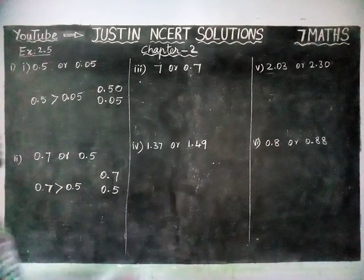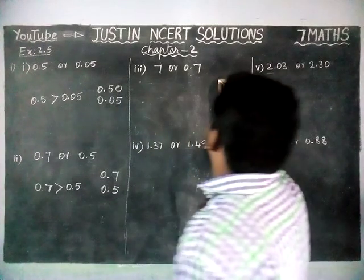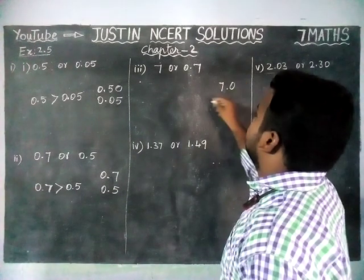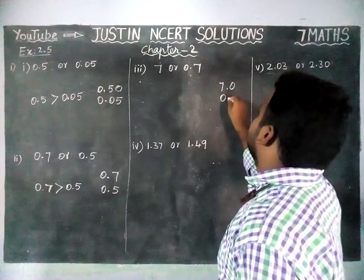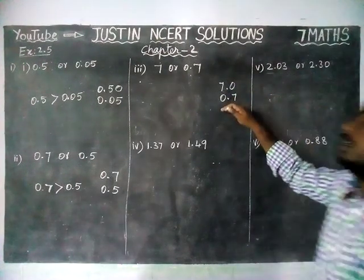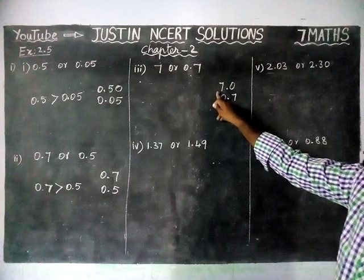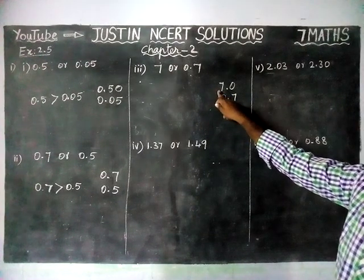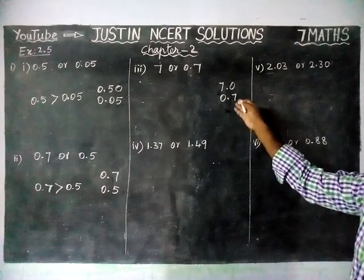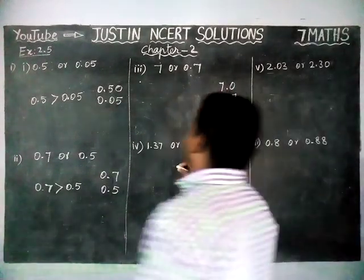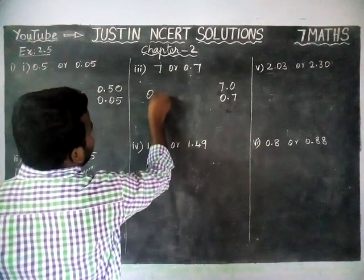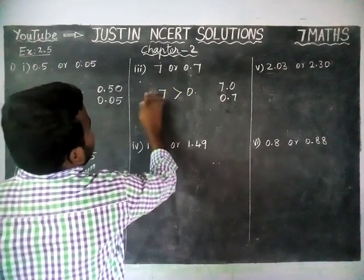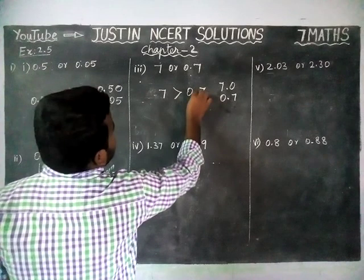Third question: we have the numbers 7 and 0.7. Without any doubt, we can say the whole part here is 7 and here it is 0. Since 7 is a whole number and 0.7 is a decimal part, 7 is the greatest value. So, 7 is greater than 0.7.